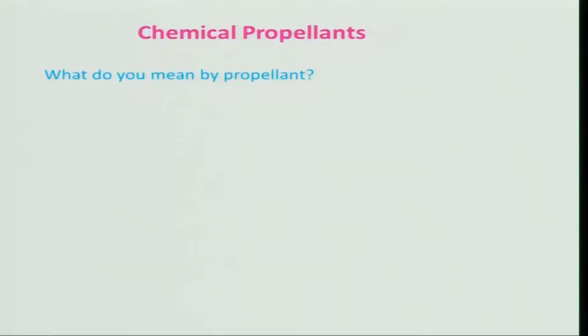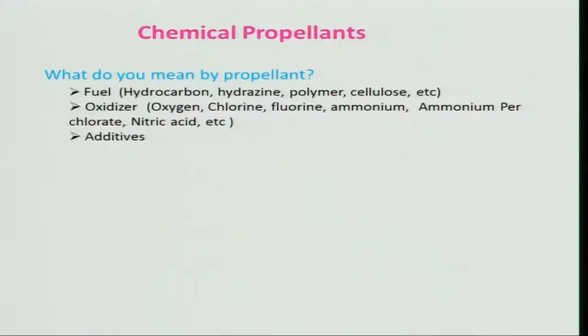Let us discuss about chemical propellants. What do you mean by propellant? A propellant basically consists of fuel and oxidizer, but apart from that there will be some additives. Why we need to add additives we will see as we go along. When you talk about fuel, it can be solid, liquid, or gaseous, and similarly the oxidizer can also be in any phase.